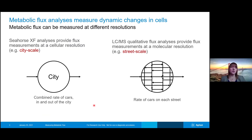These technologies do this at two different resolutions. The seahorse XF analyses provide us an idea of metabolic flux at a more city-scale view — what is the combined rate of cars into and out of a city? On the other hand, the LC-MS qualitative flux analysis provides measurements more at the street scale, giving us information about the rate of cars on each individual street within the city — a molecular resolution view.